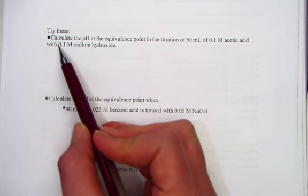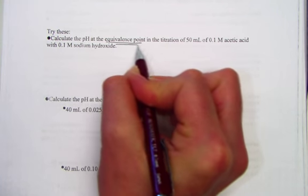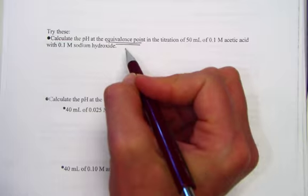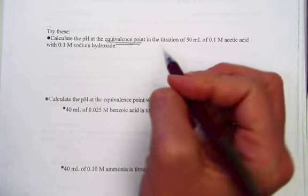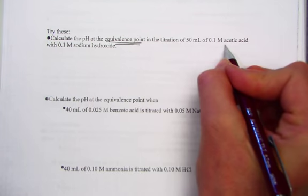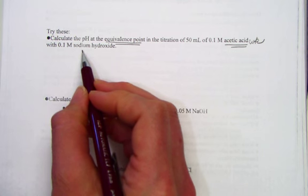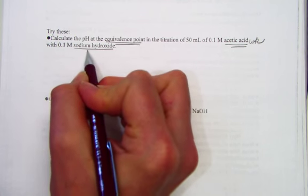Let's take a look at try these. Calculate the pH at the equivalence point, the very definition where moles of acid equal moles of base. We're titrating 50 mL of 0.1 molar acetic acid, which is a weak acid, with 0.1 molar sodium hydroxide, a strong base.